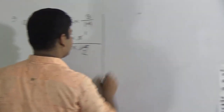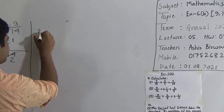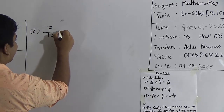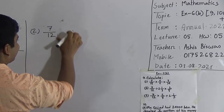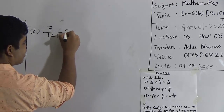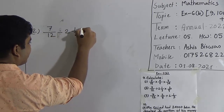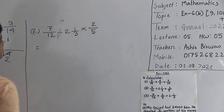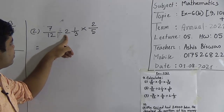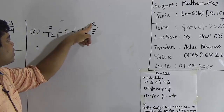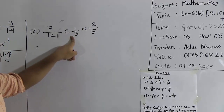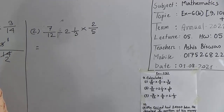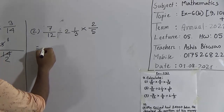Next we shall solve question number 2. The question is: 7 by 12, divided by 2 and 1 by 3, multiplied by 2 by 5. Here we notice this is a mixed fraction. So at first we need to convert this mixed fraction into an improper fraction.